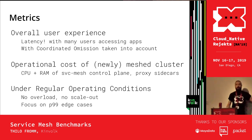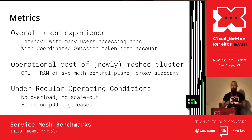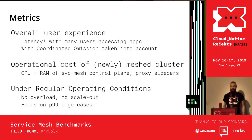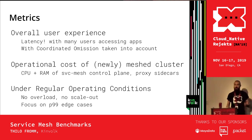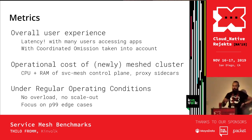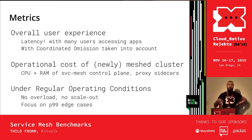For overall user experience, we used latency as our metric — many users accessing your apps without overloading your cluster — and we took coordinated omission into account for those latency metrics. For operational cost, we measured the CPU and RAM consumption that service meshes impose on your cluster when you start meshing, both for the control plane and for the proxy sidecars. Under regular operating conditions with no overload or scale-out, we focused on P99 and P999 edge cases to better understand differences.